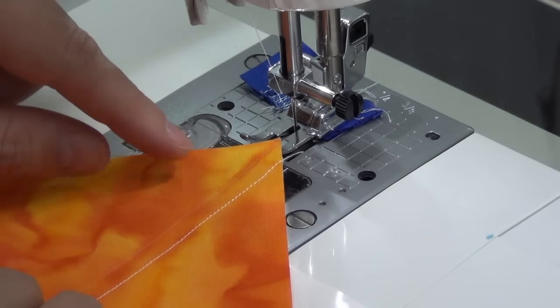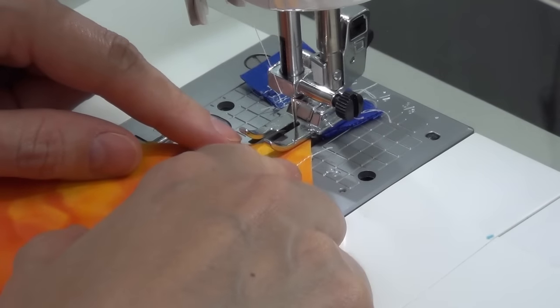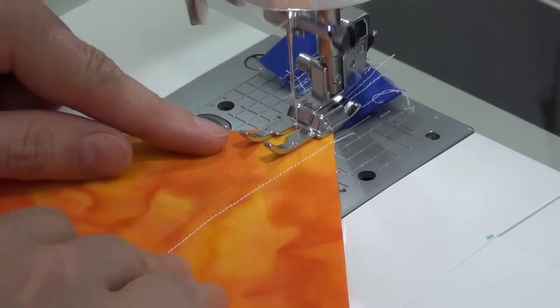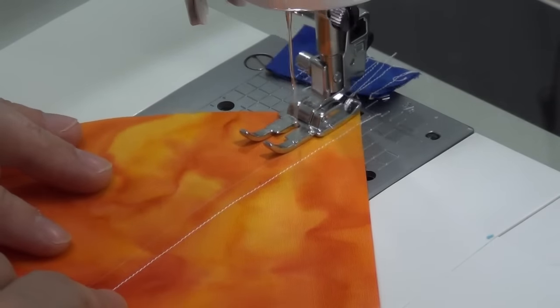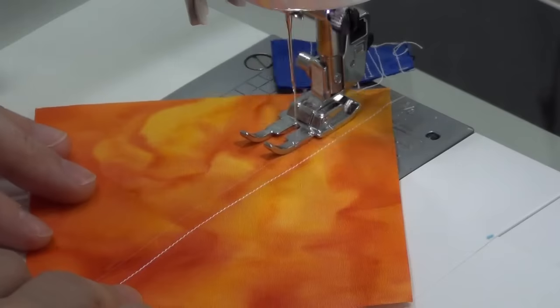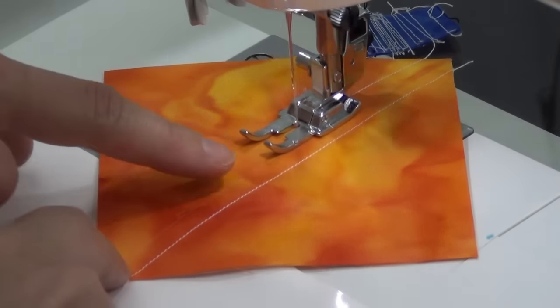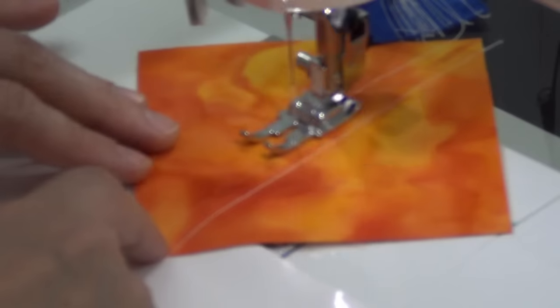Once you stitch one side of the half square triangle, you're going to rotate it around, line up your patchwork foot with that marked line again, and piece a quarter inch away from the opposite side. Just work to keep that line nicely aligned with the end of your patchwork foot all the way down.